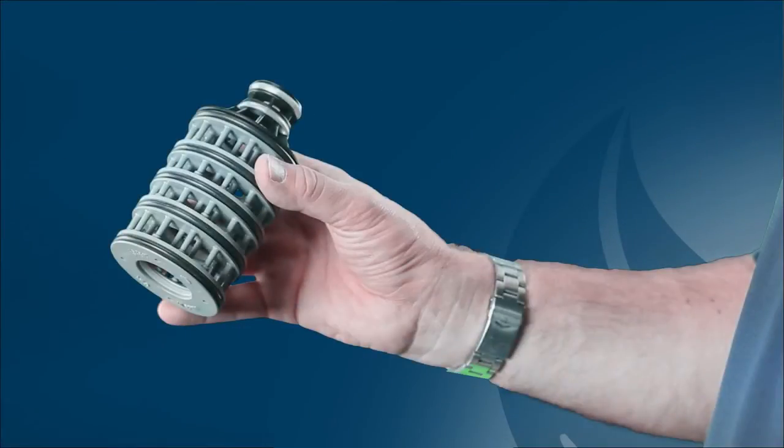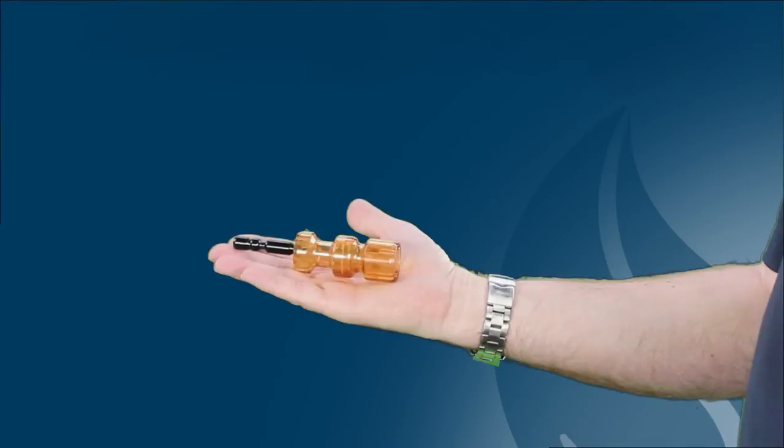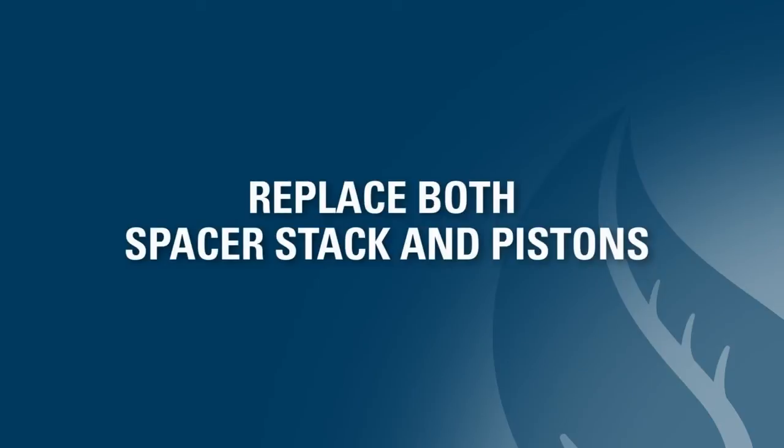If there is any water movement in either of these holes, the valve has a bad spacer stack or bad pistons. At this point, it is easiest to simply replace the spacer stack and both pistons, because identifying the faulty part is often very difficult and time consuming.